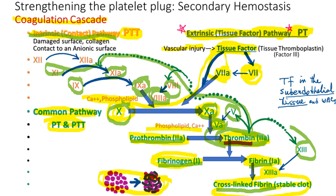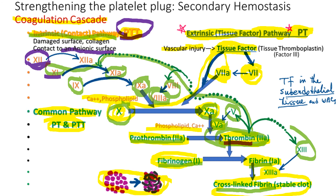When thrombin is generated from the extrinsic pathway, it initiates the intrinsic pathway from factor XI. This raises the question: why do we need factor XII if the extrinsic pathway can initiate the intrinsic pathway bypassing it? Factor XII may not have a very important role here — patients with factor XII deficiency have abnormally prolonged PTT but do not have bleeding problems. Interestingly, the first known patient with factor XII deficiency died of pulmonary embolism. Factor XII is activated when it contacts an anionic surface such as an activated platelet membrane, bacterial surface, or glass, so it does have some role in activating factor XI.